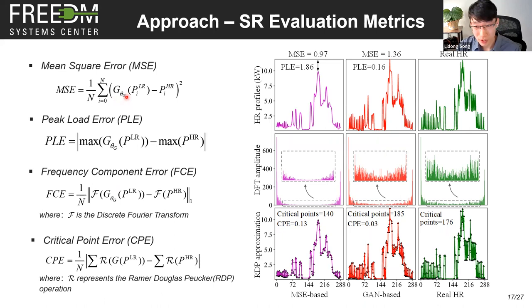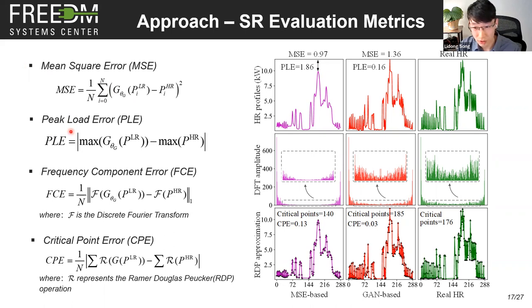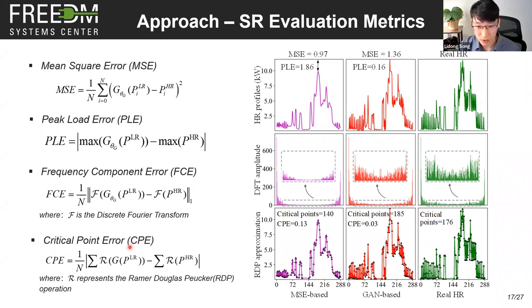To quantitatively evaluate super resolution performance, we adopted four metrics. The first is mean square error, which measures the average point-to-point error — it is also the only loss function in the conventional super resolution approach. The other three are shape-related metrics. Peak load error measures peak load discrepancy. Frequency component error reflects the frequency domain difference. Critical point error reflects the complexity of a curve by extracting critical turning points and checking how well they are matched. All four metrics are error metrics — lower is better.